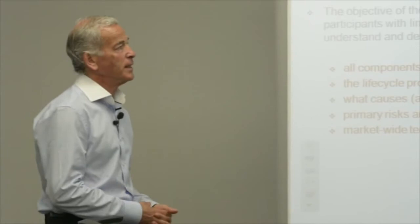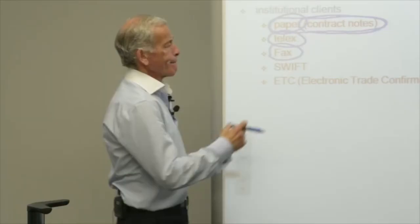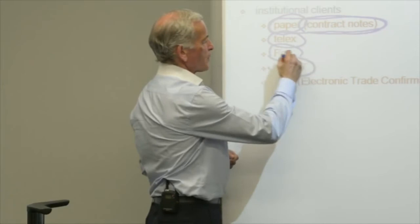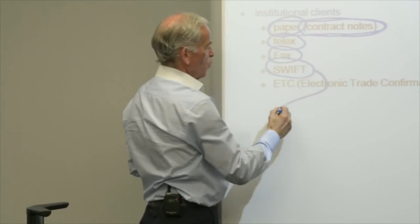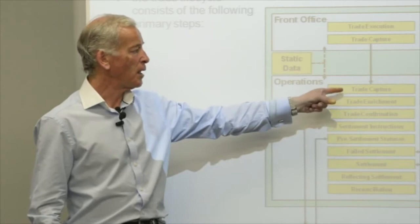This course is a complete trade lifecycle guide including processing sequence, impact, primary risks, and typical mitigation controls. It will cover all aspects of the trade lifecycle: the lifecycle processing sequence and processing impact, what causes and prevents straight-through processing, primary risks and typical mitigating controls, and market-wide terms used in trade processing.